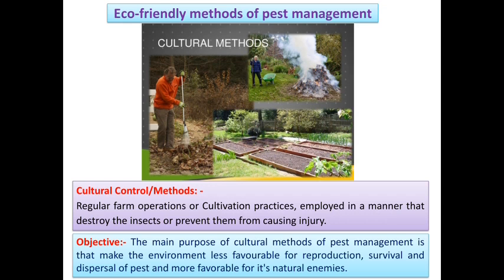The main purpose of the cultural method of pest management is to make the environment less favorable for reproduction, survival, and dispersal of the pest, and more favorable for its natural enemies. With the help of regular farm operations, we reduce pest infestation and support natural enemies — those helpful insects that help check pest populations in our agroecosystem.